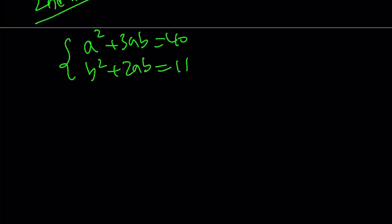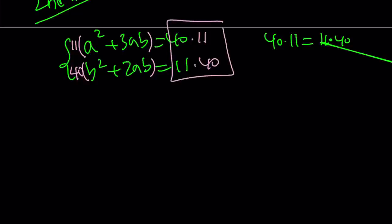I have this system. I want to get rid of the constants, 40 and 11. Can I do that? Absolutely. Because 40 times 11 is the same as 11 times 40. Let's multiply the first equation by 11 and the second equation by 40. There you go. You got the same number on the right-hand side.